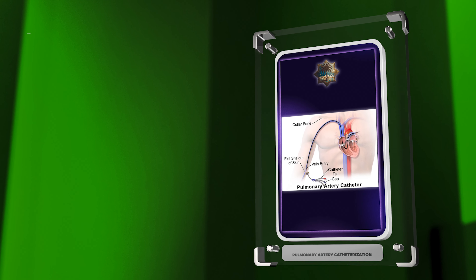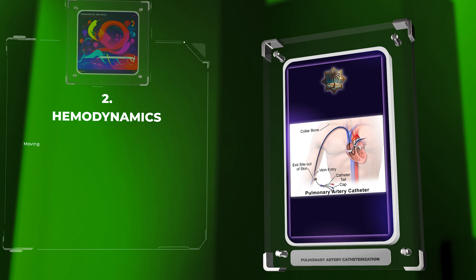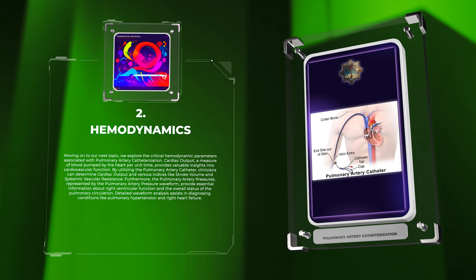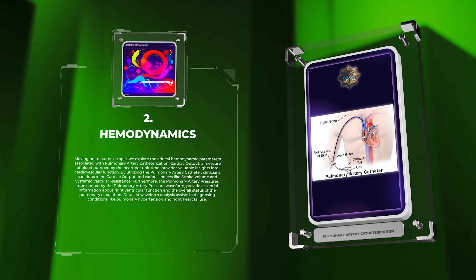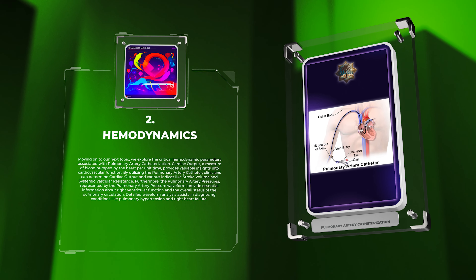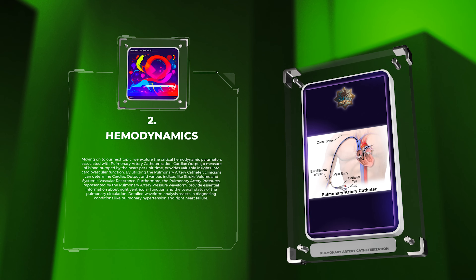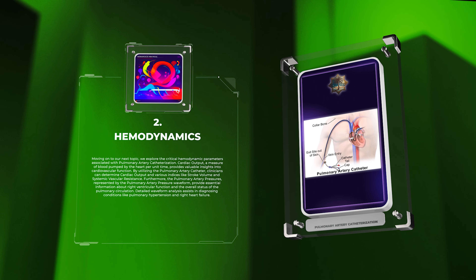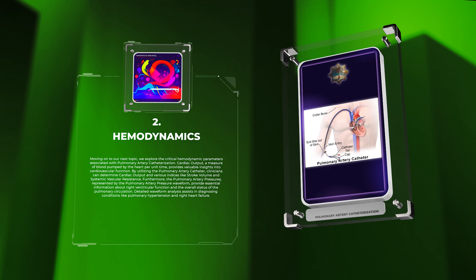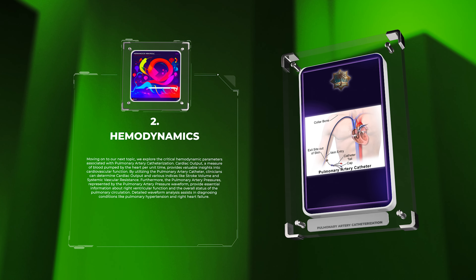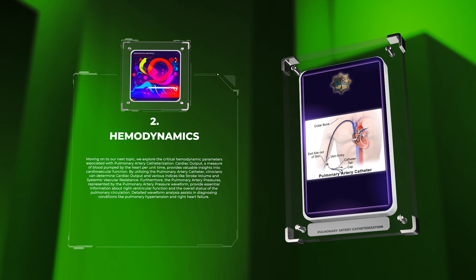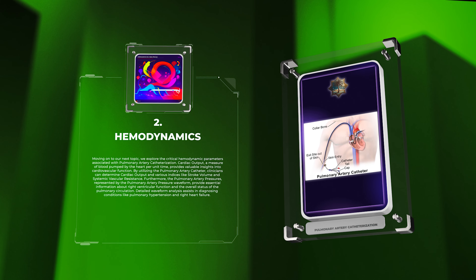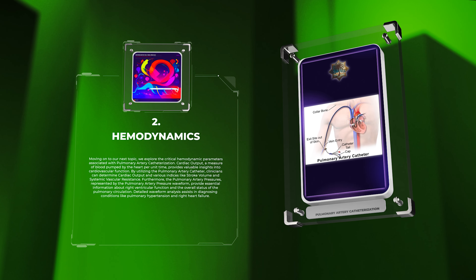Moving on to our next topic, we explore the critical hemodynamic parameters associated with pulmonary artery catheterization. Cardiac output, a measure of blood pumped by the heart per unit time, provides valuable insights into cardiovascular function. By utilizing the pulmonary artery catheter, clinicians can determine cardiac output and various indices like stroke volume and systemic vascular resistance.